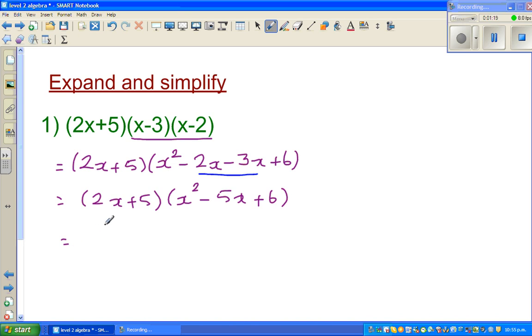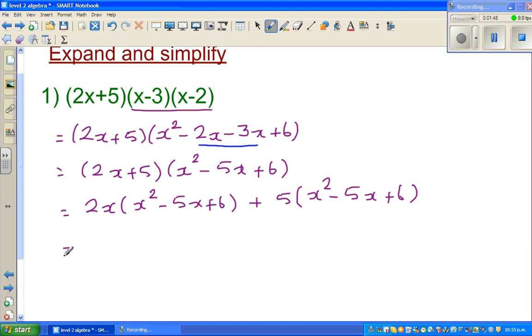Now you don't have an acronym for this. To do the next step I would do it like this. This is always safe to do. 2x times this whole bracket, x squared minus 5x plus 6. It's always good to be safe, because students tend to do lots of mistakes at this step. So I prefer that you do this step.